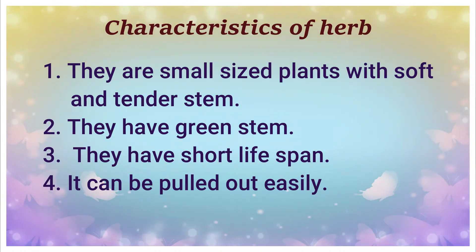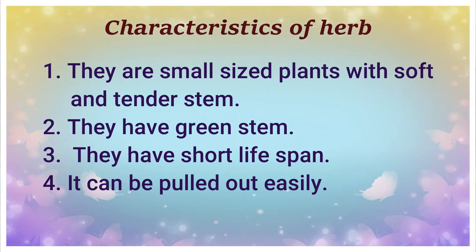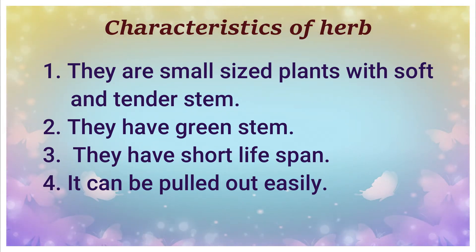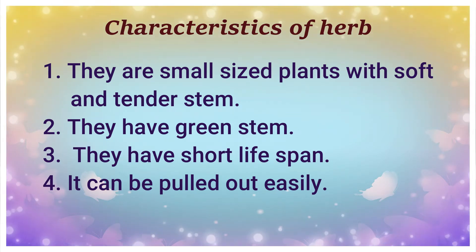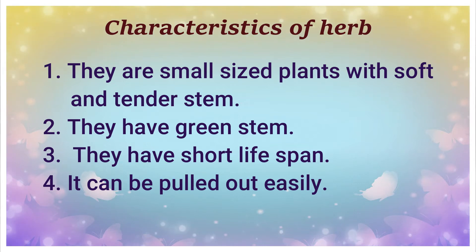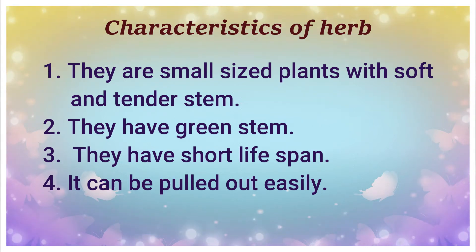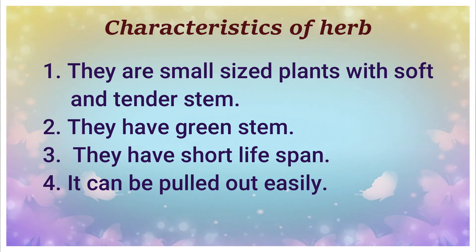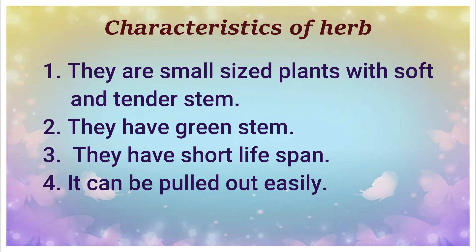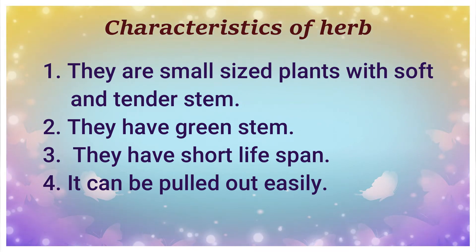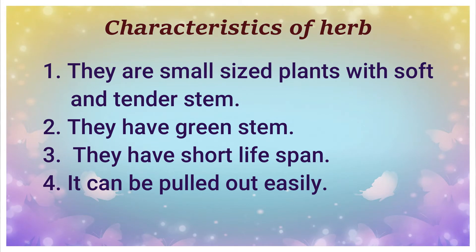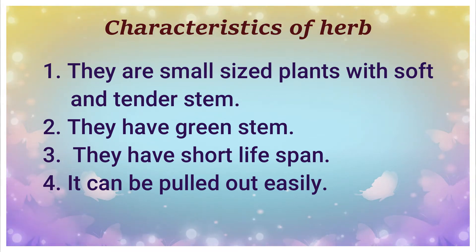The characteristic features of herbs: they are small-sized plants with soft and tender stem and a green stem. They have a short lifespan of one season or one year, so they are also called seasonal plants or annually grown plants. They can be pulled out easily as they have fibrous roots.